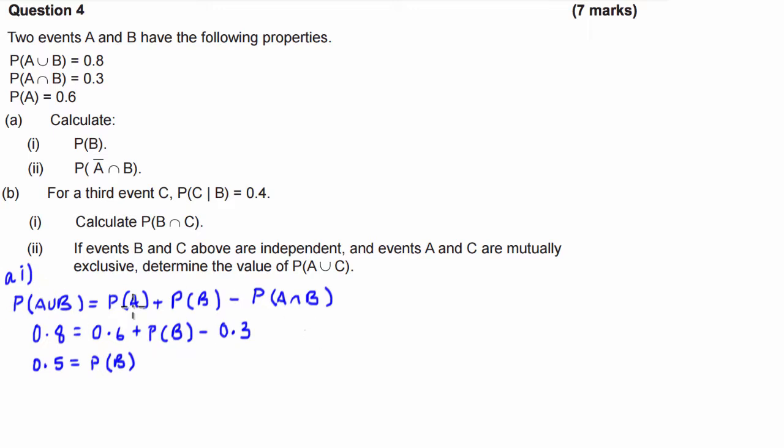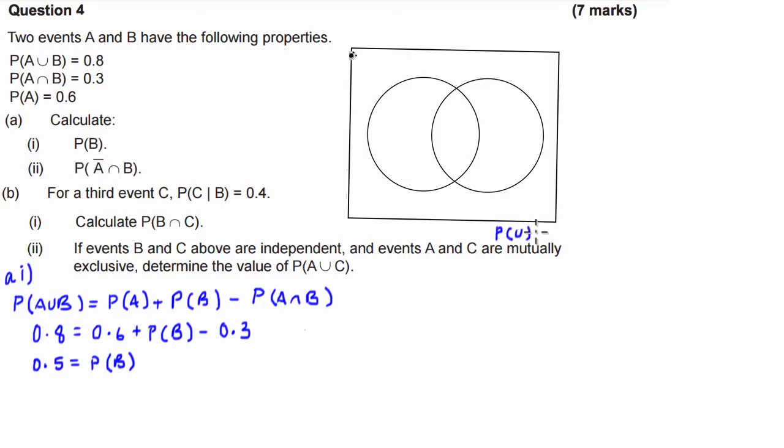Now, alternatively, if you don't want to just write it down in the formula and you're more of a visual kind of person, you can just put a Venn diagram like this. We know that the probability of the universal set is equal to 1. We know that the probability of A union B is 0.8, so the outside piece will be 0.2.